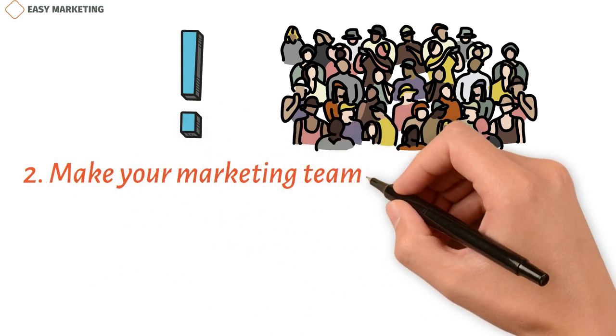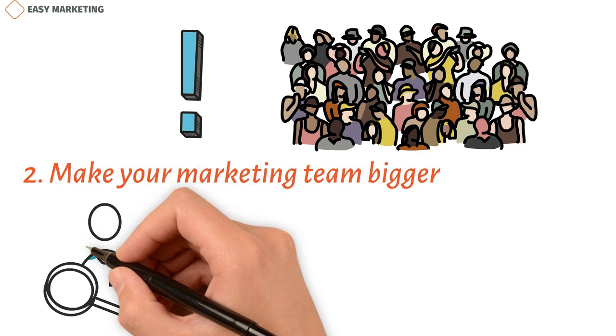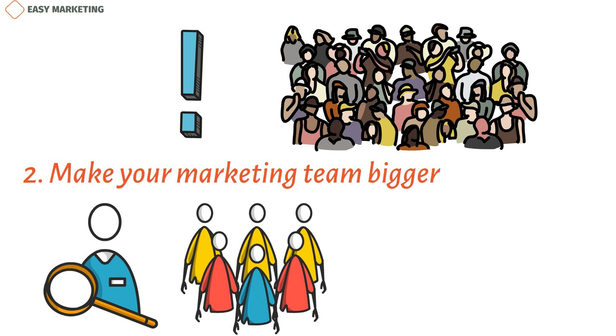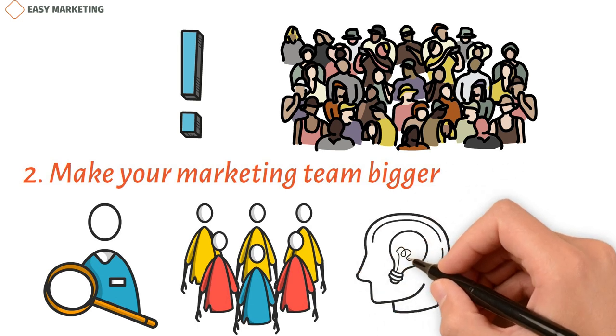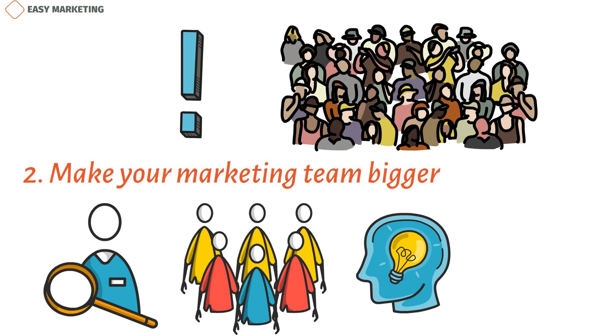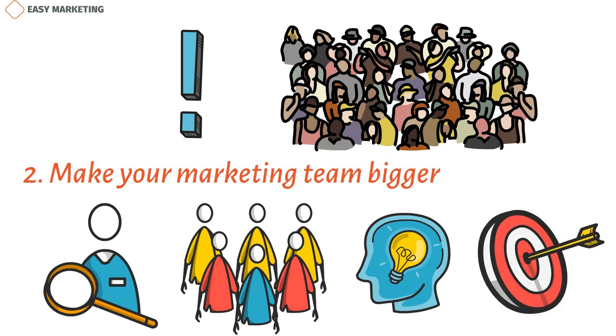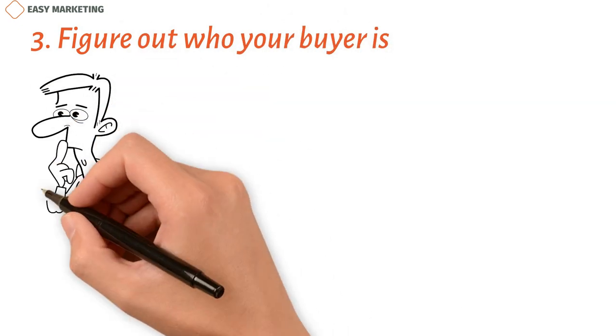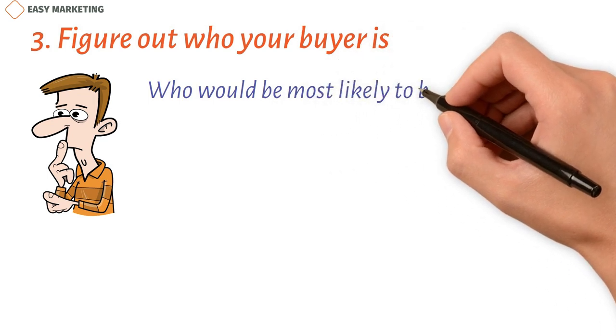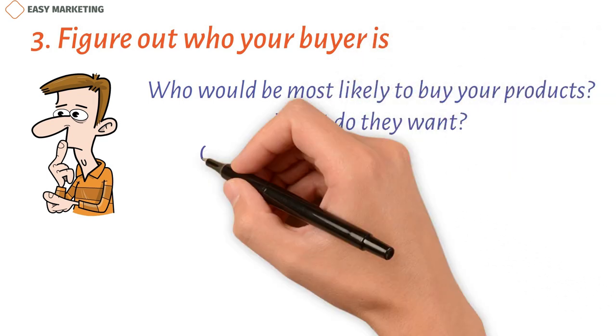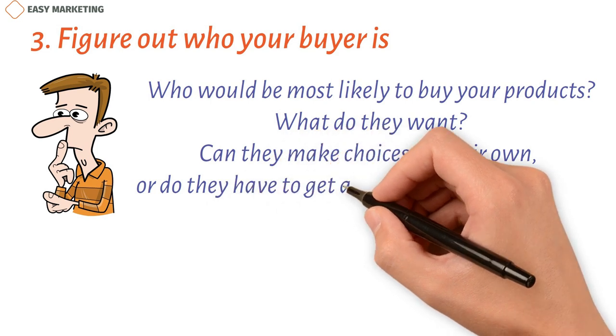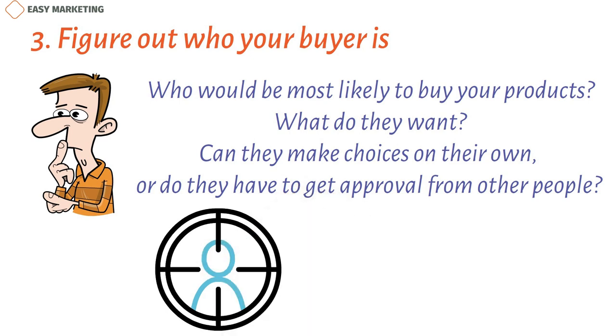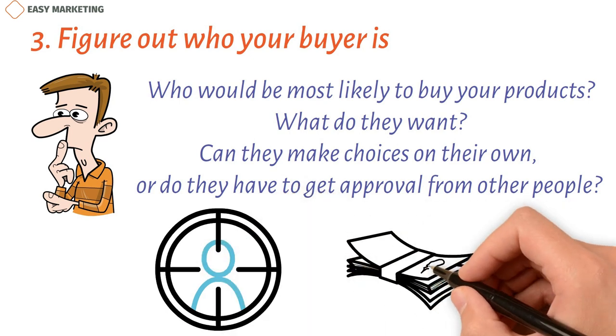Make your marketing team bigger. Someone needs to keep track of all this work. You can pay an agency with experience in manufacturing marketing, but it's still a good idea to have someone in-house who focuses on digital marketing and holds freelancers or agencies responsible to your business goals. Figure out who your buyer is. Spend some time thinking about who you want to reach. Who would be most likely to buy your products? What do they want? Can they make choices on their own, or do they have to get approval from other people? The more you know about the buyer persona, the better you can focus your marketing, which saves you time and money.